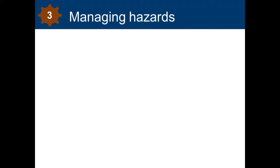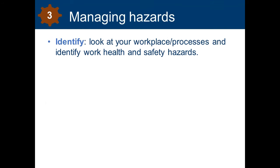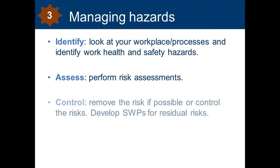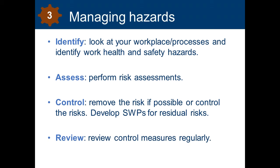Now let's look at what you need to do to manage risks in your business. First we're going to look at hazard management, which is essentially a problem-solving exercise to identify hazards, assess the risks, control the risks, and regularly review your controls. The first step is to identify any hazards. You can do this by looking around your workplace or work site, looking at your work processes, talking to your workers, and looking at what has already happened, such as reviewing any previous incident reports.